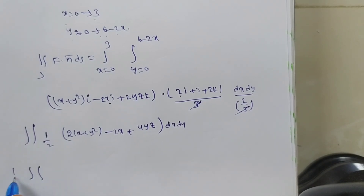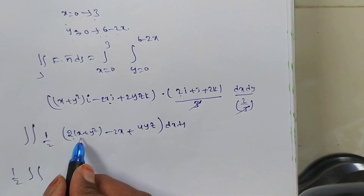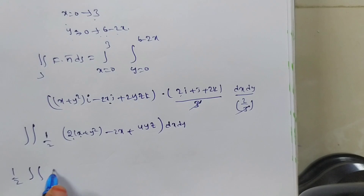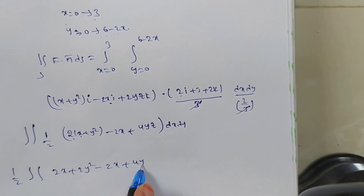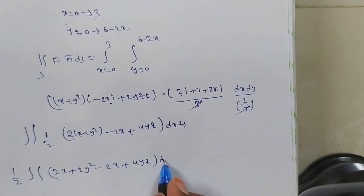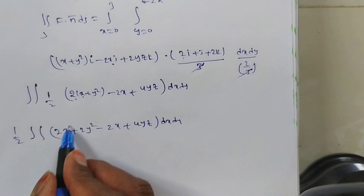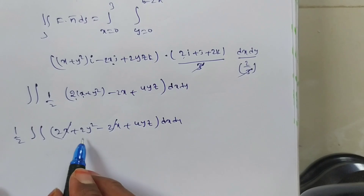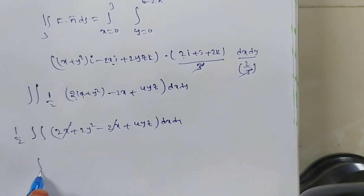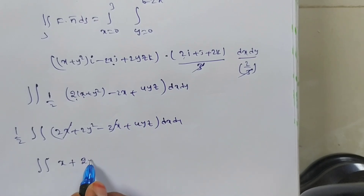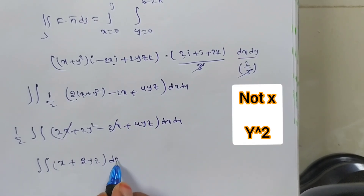Simplifying: 2x and −2x cancel. We get (1/2) times the double integral of (2y² + y + 4yz) dx dy. Taking 2 as common outside, the integrand becomes y² + 2yz — wait, correcting: the term x does not remain; it is replaced by y² only.